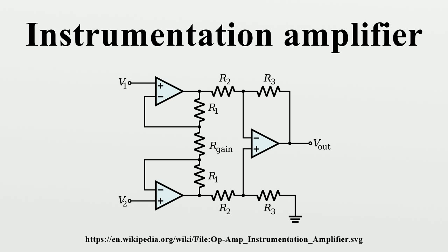An IC instrumentation amplifier typically contains closely matched laser-trimmed resistors and therefore offers excellent common mode rejection. Examples include AD-8221, MAX4194, LT1167, and INA128.